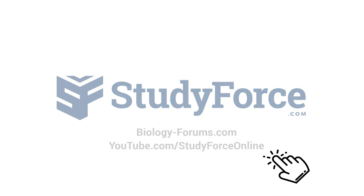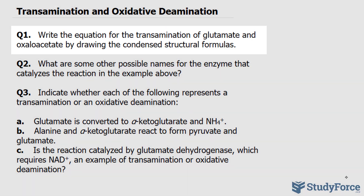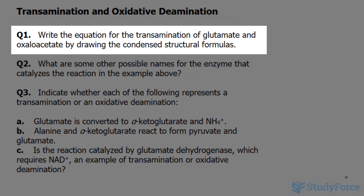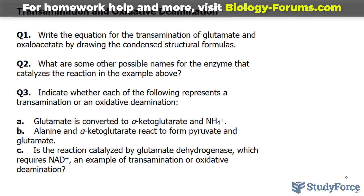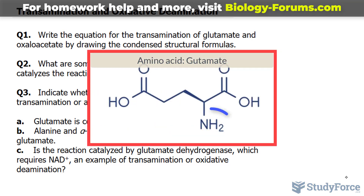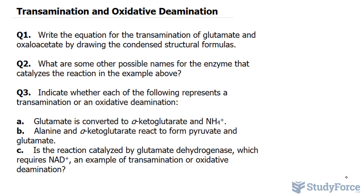In this lesson, we'll discuss three examples involving transamination and oxidative deamination. The first question reads: write the equation for the transamination of glutamate and oxaloacetate by drawing the condensed structural formulas. In a transamination reaction, a transaminase enzyme catalyzes the transfer of the alpha amino group of an amino acid to an alpha-ketoacid, such as oxaloacetate, alpha-ketoglutarate, or even pyruvate. The products formed are a new amino acid and a new alpha-ketoacid.